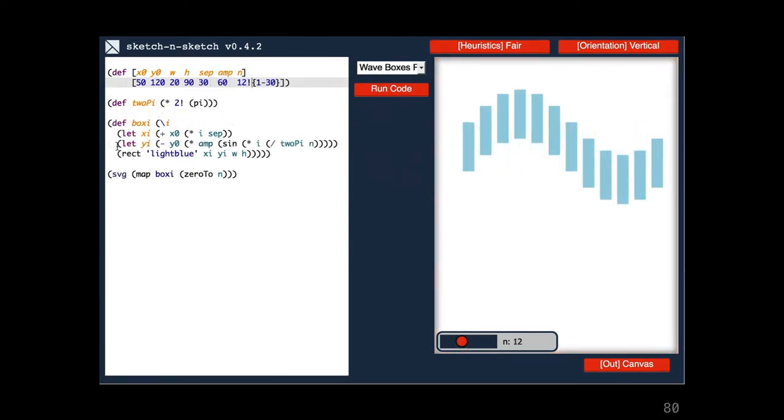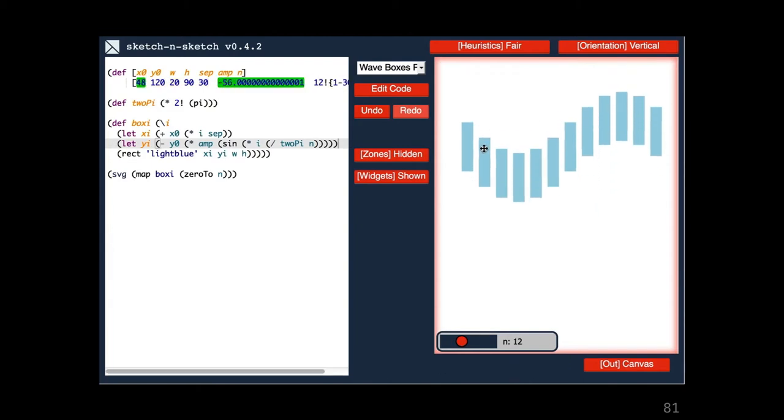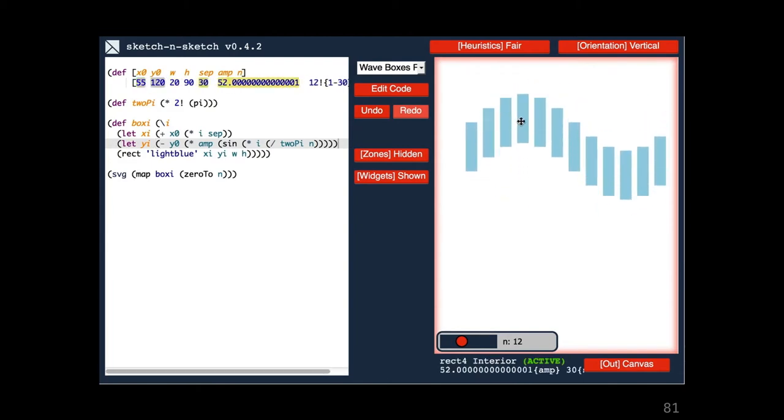This example is almost exactly the same, but now the y position of each box is calculated based on a sine wave. Direct manipulation lets us change the wave amplitude in addition to the parameters that we could change in the last example.